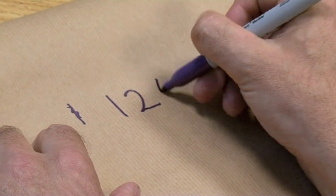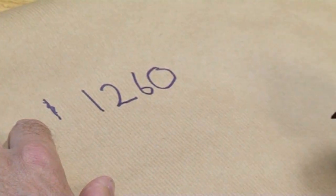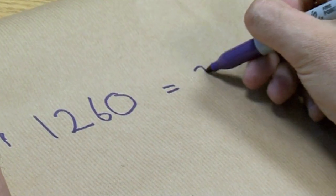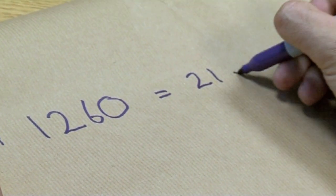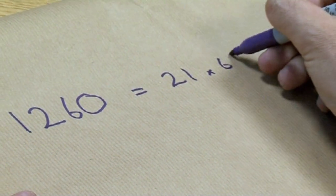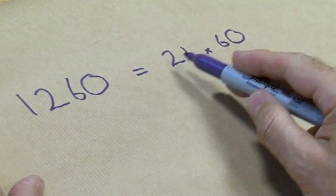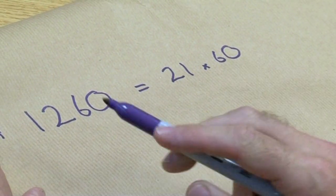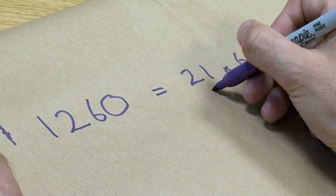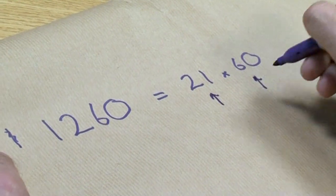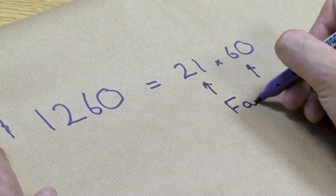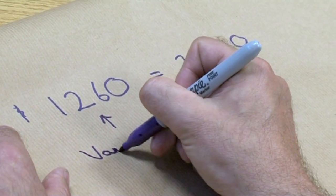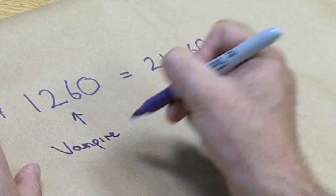One thousand two hundred and sixty — that's a four-digit number. I can write it as the product of two two-digit numbers: twenty-one times sixty. You can see that the same four digits that make up the original number appear in the new numbers. These are my two fangs, and this is my original vampire.